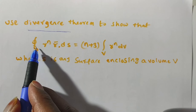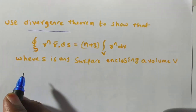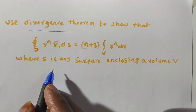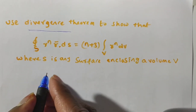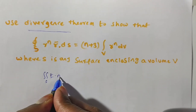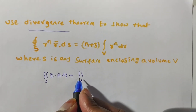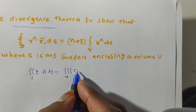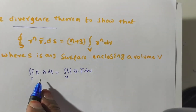Now we are solving this problem using the Divergence Theorem. Here they have mentioned clearly that S is a closed surface, so we can apply the Gauss Divergence Theorem. The statement is: double integral over S of f̄ · n̄ dS is equal to triple integral over V of del · f̄ dV.